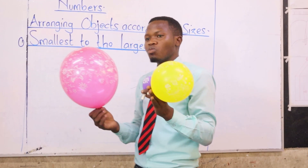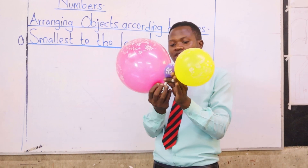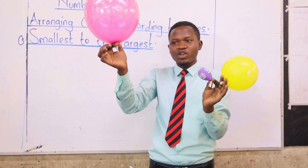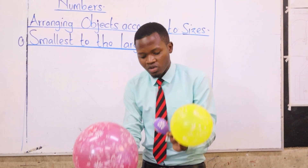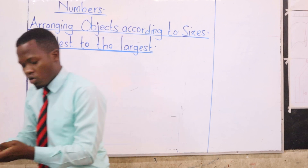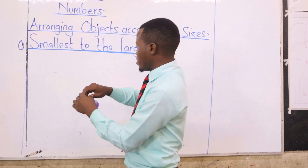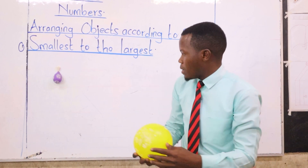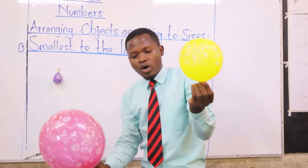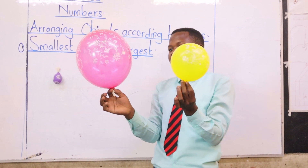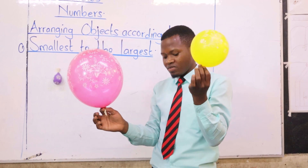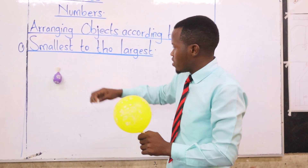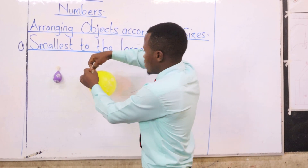So we are going to arrange these three balloons starting with the smallest. Which one is the smallest? The purple one — very good. The purple one is the smallest, so we put the purple balloon first. After putting the purple balloon, we are remaining with two balloons: the yellow one and the red one. Between the yellow and the red, which one is the smallest? The yellow one, so we put it next to the purple balloon.